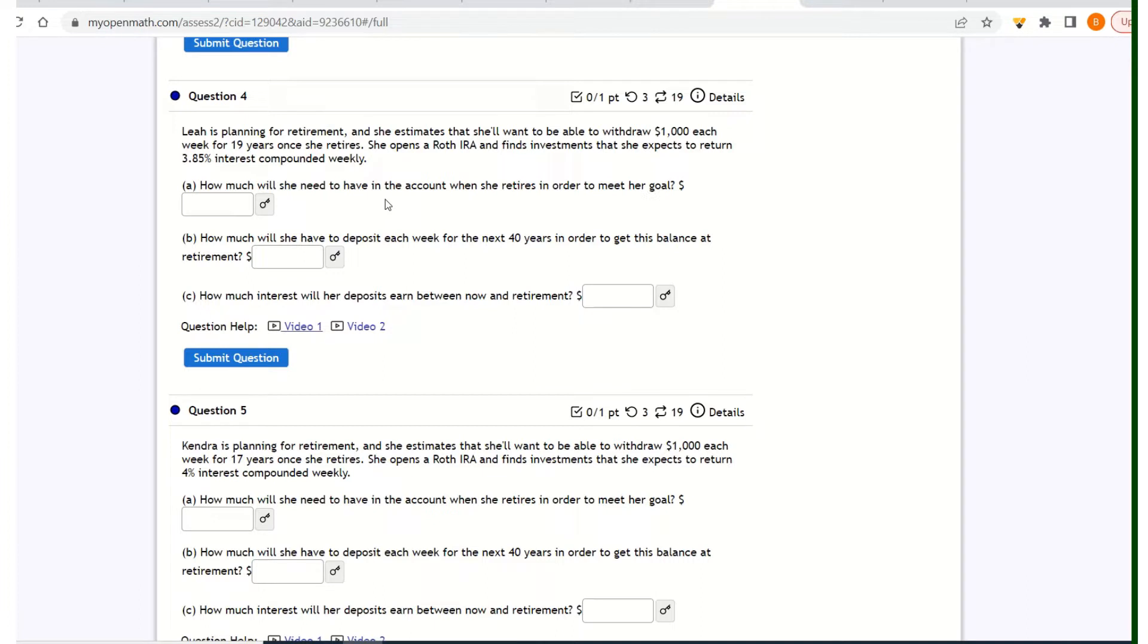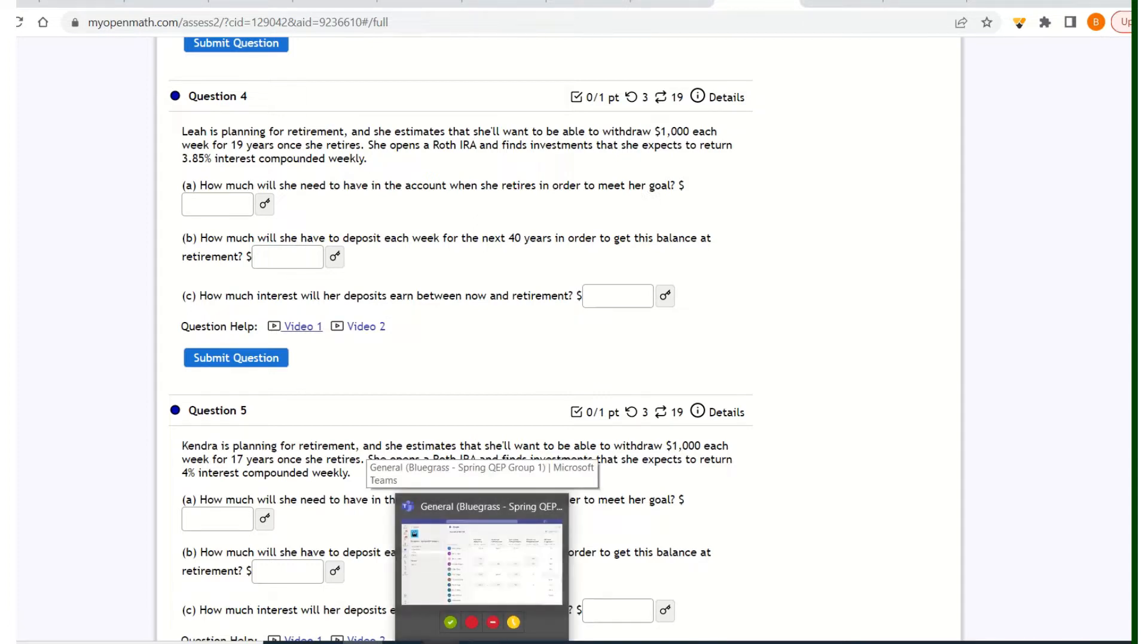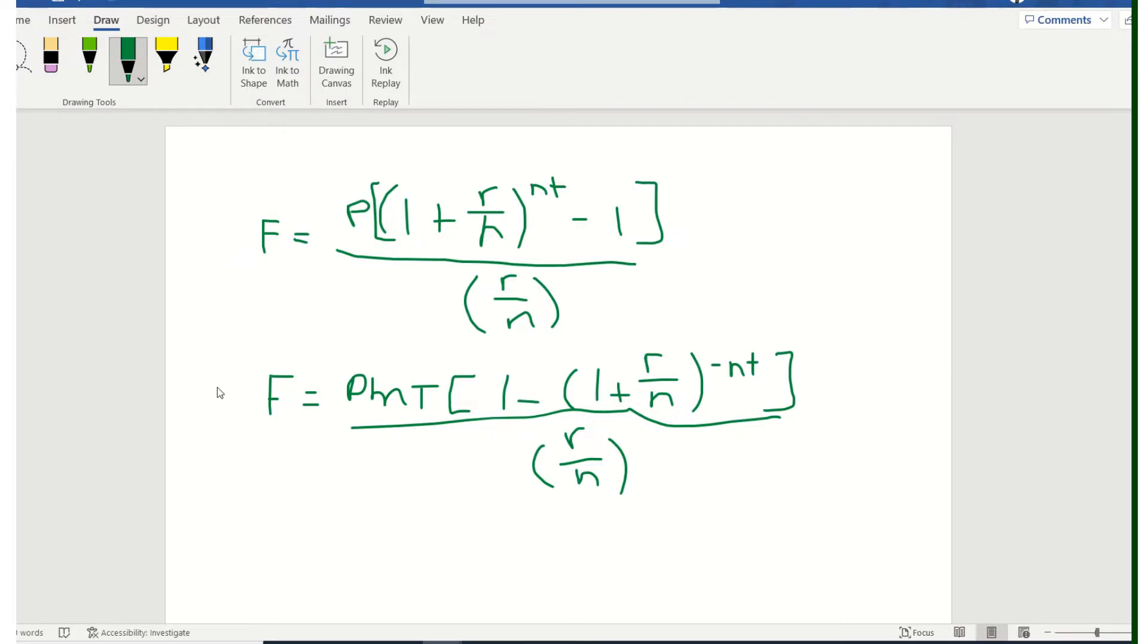Now, since this account is going to have stuff coming out of it, we want to use the following formula, the second one right here. Because any time we're taking money out of account, I always tell a student, look for the negative exponent. You're subtracting money, so we want a negative exponent for that subtraction.